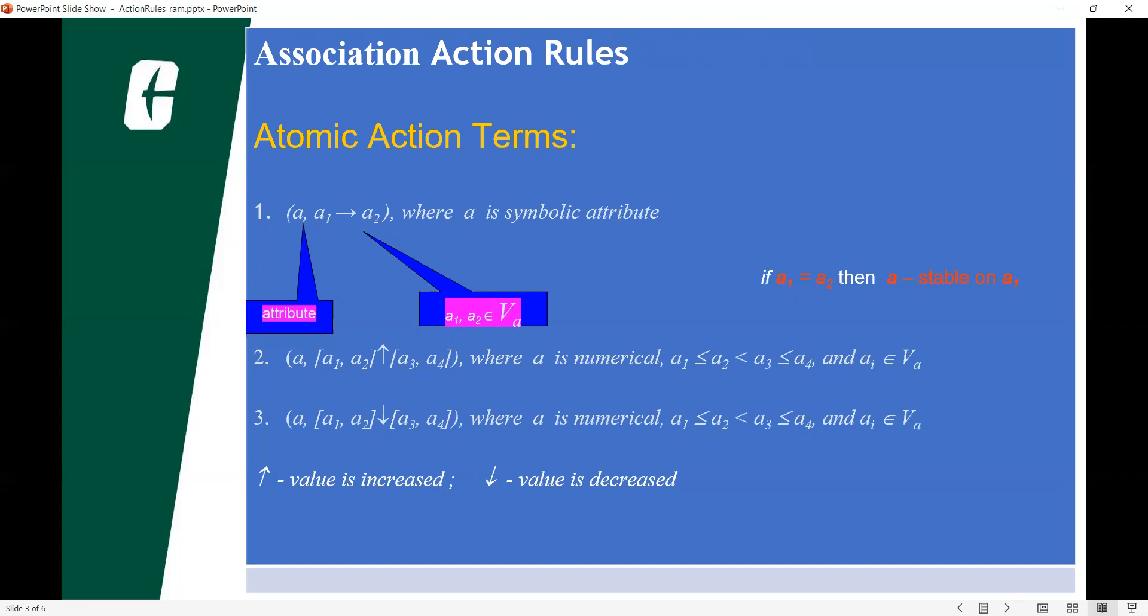Association rules have a number of applications and are widely used to help discover sales correlations in transactional data or medical data sets. Particularly in data science, association rules are used to find correlations and co-occurrences between data sets.